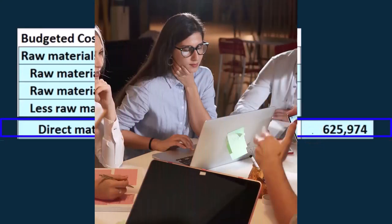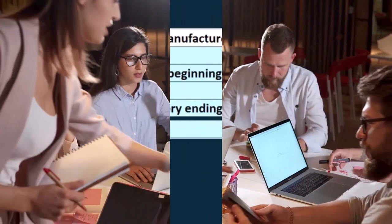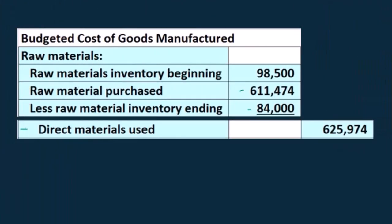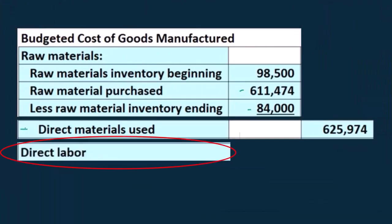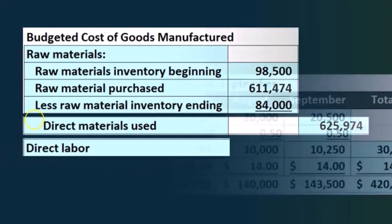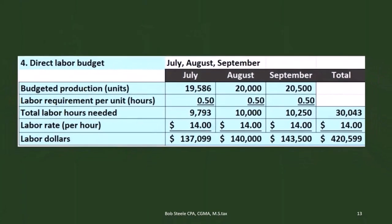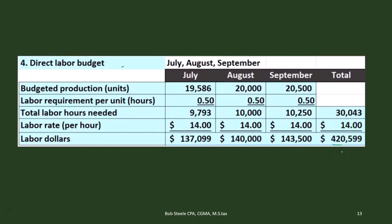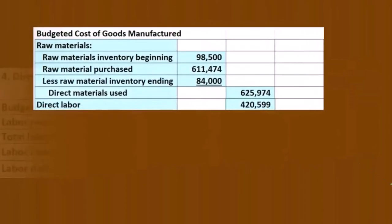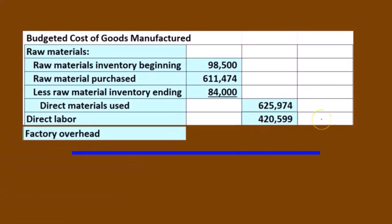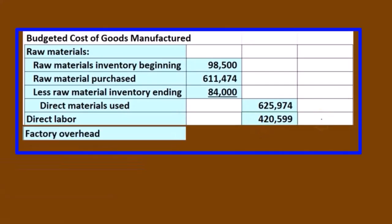Remember, when we talk about the manufacturing of inventory we're talking about direct materials, direct labor, and overhead. This is the calculation we need to go through to get the amount of direct material actually used. Next we look at direct labor, which is a bit more straightforward. We jump back to Step 4, the direct labor budget, and take the total for the quarter: $425,990.